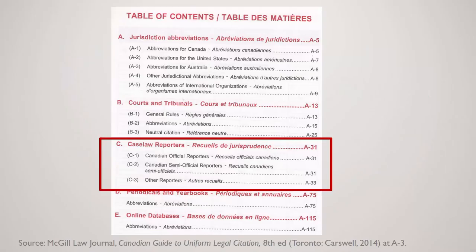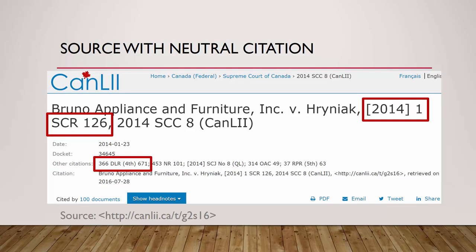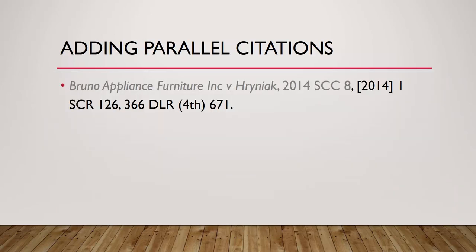You will need to regularly consult the McGill Guide appendices to confirm whether reporters are official, semi-official, or other, and to confirm the proper abbreviation for the reporters. Looking back to our source, we see that we have the SCR, an official print reporter. This should be included as a parallel citation. The DLR is a good choice because there is no semi-official reporter and the DLR is an official reporter that is widely available. After confirming the proper abbreviation in the appendices, we include the parallel citations.